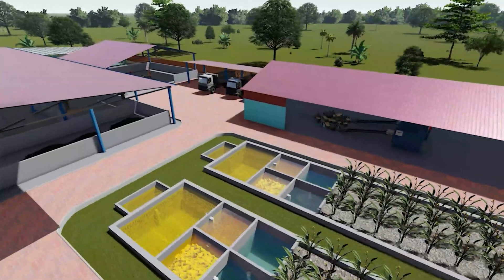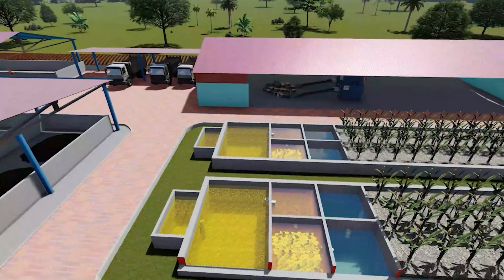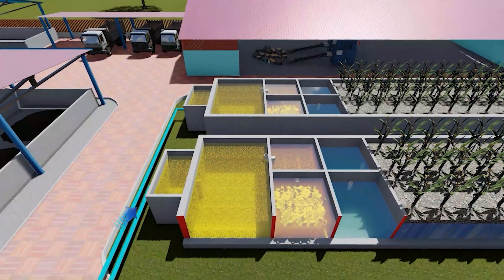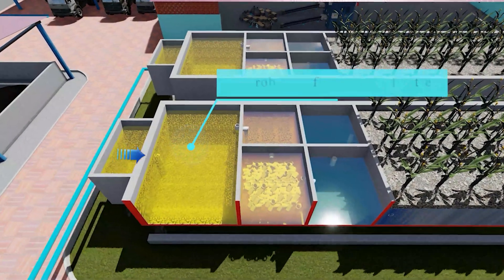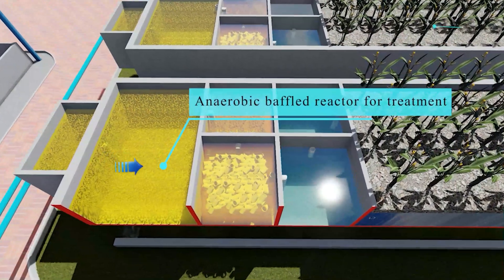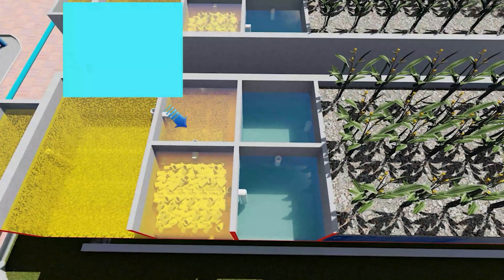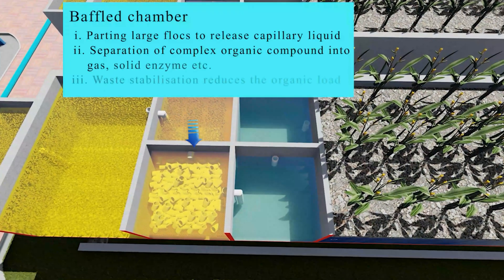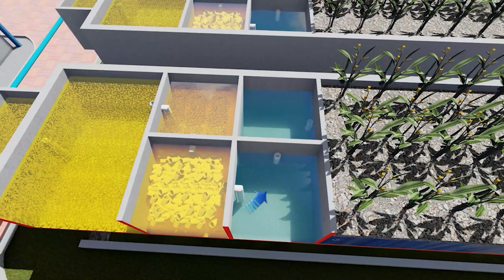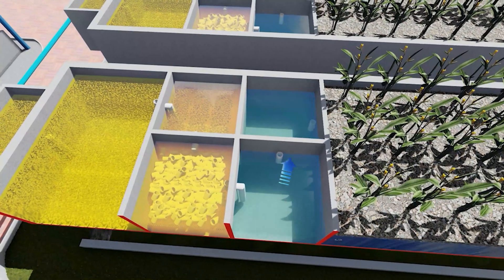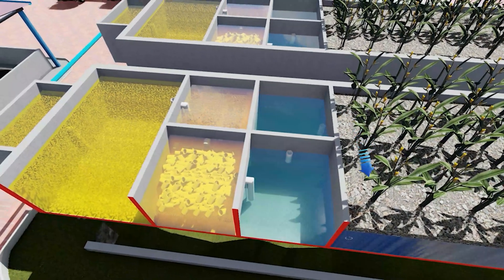The liquid effluent percolated from the planted drying beds undergoes a two-stage treatment. Initially, it is processed in an integrated settler and anaerobic filter, where settlable solids are removed via sedimentation. Subsequently, the wastewater flows through the anaerobic filter, where anaerobic degradation of suspended and dissolved solids occurs.